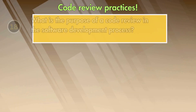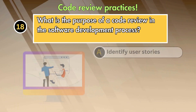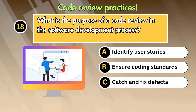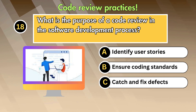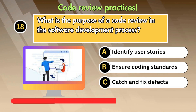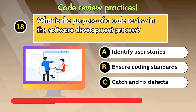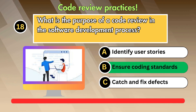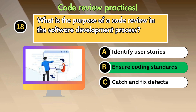Question 18: What is the purpose of a code review in the software development process? Option 1: Identify user stories. Option 2: Ensure coding standards. Option 3: Catch and fix defects. Answer is: Ensure coding standards.